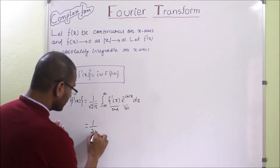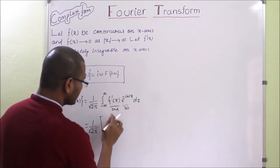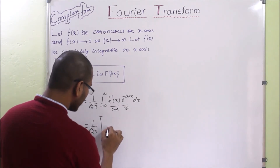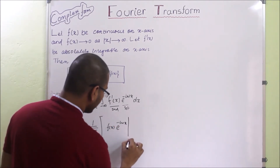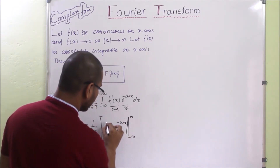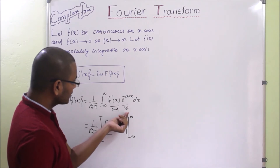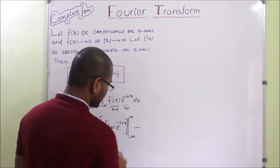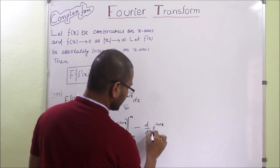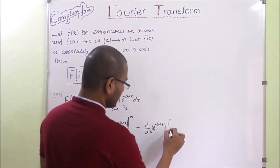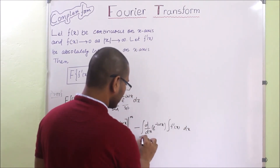Applying integration by parts, the factor (1/√2π) remains. Taking e^(−iωx) as the first function and f'(x) as the second, we get: f(x) · e^(−iωx) evaluated from −∞ to +∞, minus the integral from −∞ to +∞ of (d/dx of e^(−iωx)) times the integral of f'(x) dx. The integration of f'(x) gives f(x), and we keep the first function as it is.